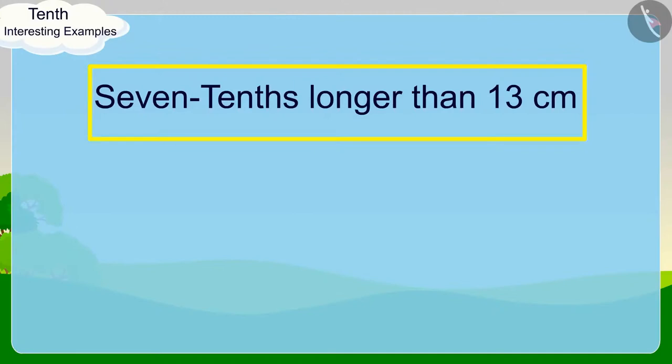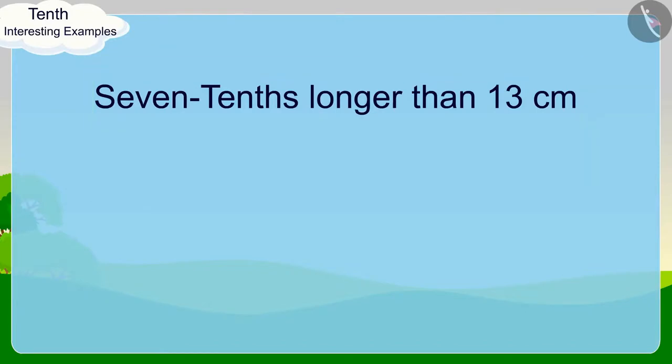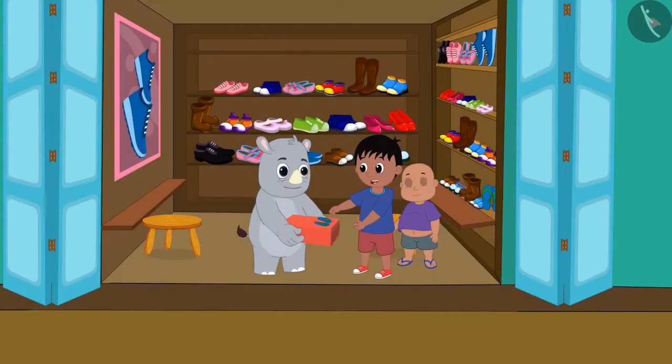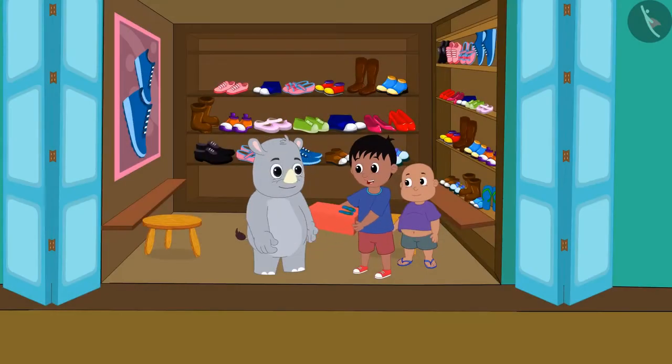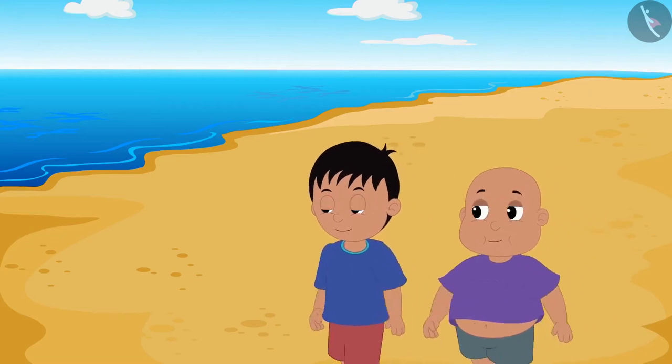Bablu's foot's measure is 7 tenths longer than 13 centimeters. This means Bablu's foot's measurement is 13 centimeters and 7 millimeters or 13.7 centimeters. Raju and Bablu bought their new slippers and happily went for a walk on the beach.